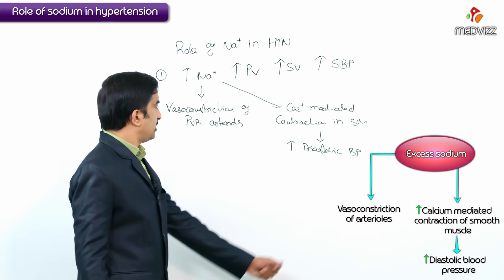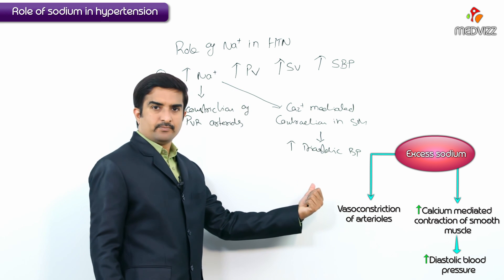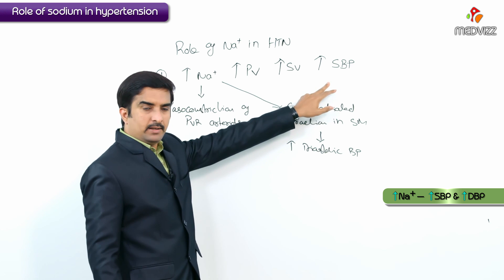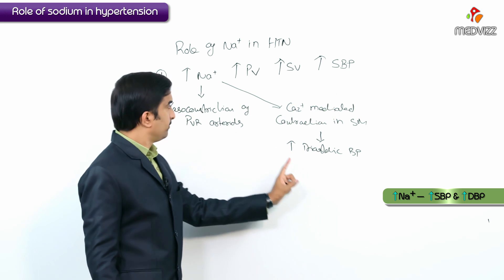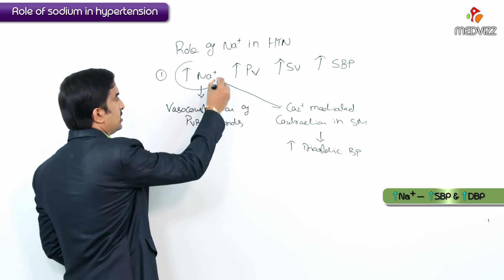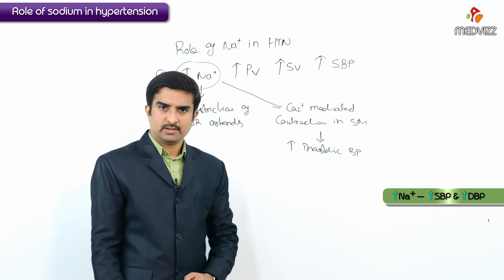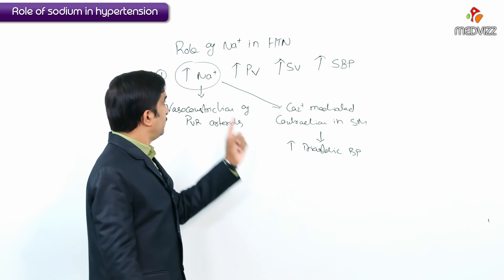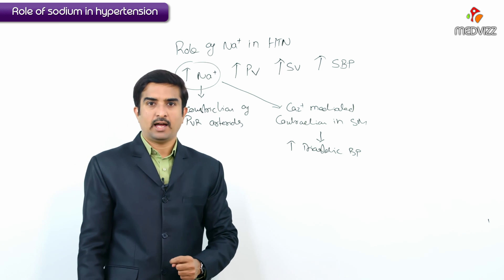So what do we understand from this mechanism? Increase in systolic BP and increase in diastolic BP are seen when the concentration of sodium is high. This is the role of sodium in hypertension.